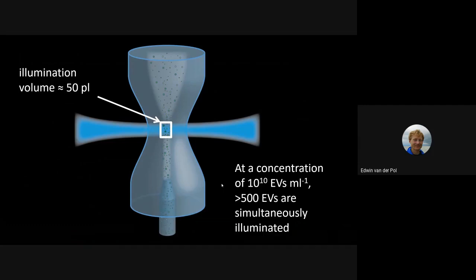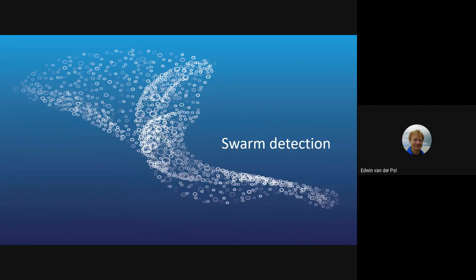We looked at the configuration of the flow cytometer: the focused laser beam, the sample stream carrying the particles, and the effective illumination volume, which we calculated and estimated based on the geometry to be around 50 picoliters. From other equipment and flow cytometry, we knew that the concentration of vesicles in this urine sample was around 10 billion EVs per milliliter. That means that without dilution, on average more than 500 vesicles were simultaneously illuminated — and we were not aware of that at that time. We gave this phenomenon the name swarm detection.